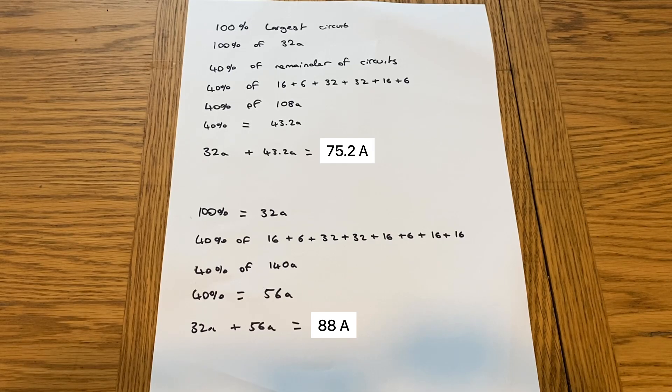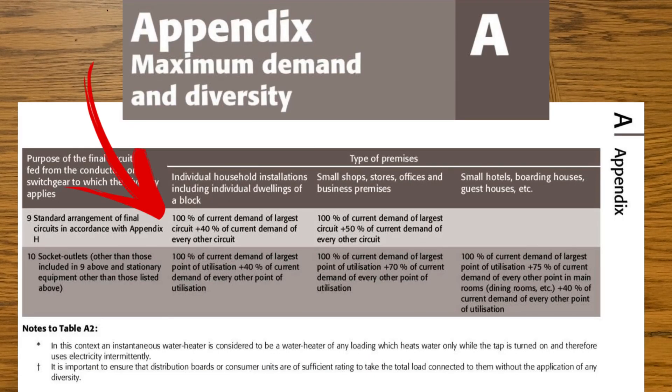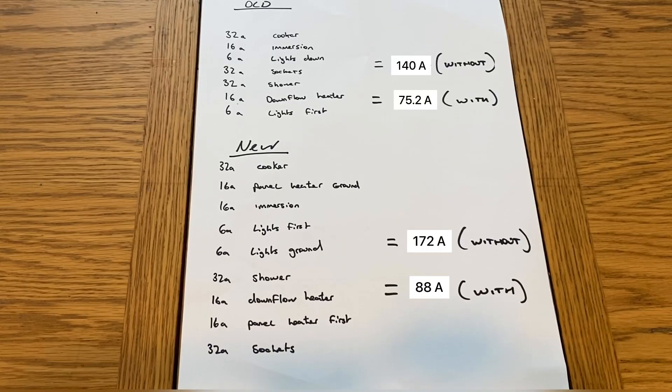We use this from the on-site guide and generally in a domestic dwelling we can do it this way as long as the circuit arrangements are in accordance with appendix H of the on-site guide. So now we've done our calculations with applying diversity, we can go back and look at the difference.